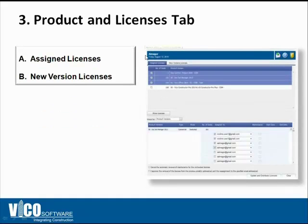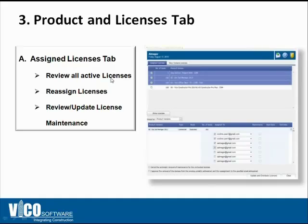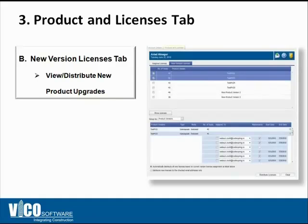Once you move away from your dashboard view, you enter into the products and licenses tab at the top, which has two sections. The assigned licenses tab is where you will review all your active licenses, reassign licenses, and review and update the license maintenance for each of your licenses. The new versions tab is where you will get notification that there's been a new release, and you would go into this interface and view and distribute any new release or upgrades to the end user.